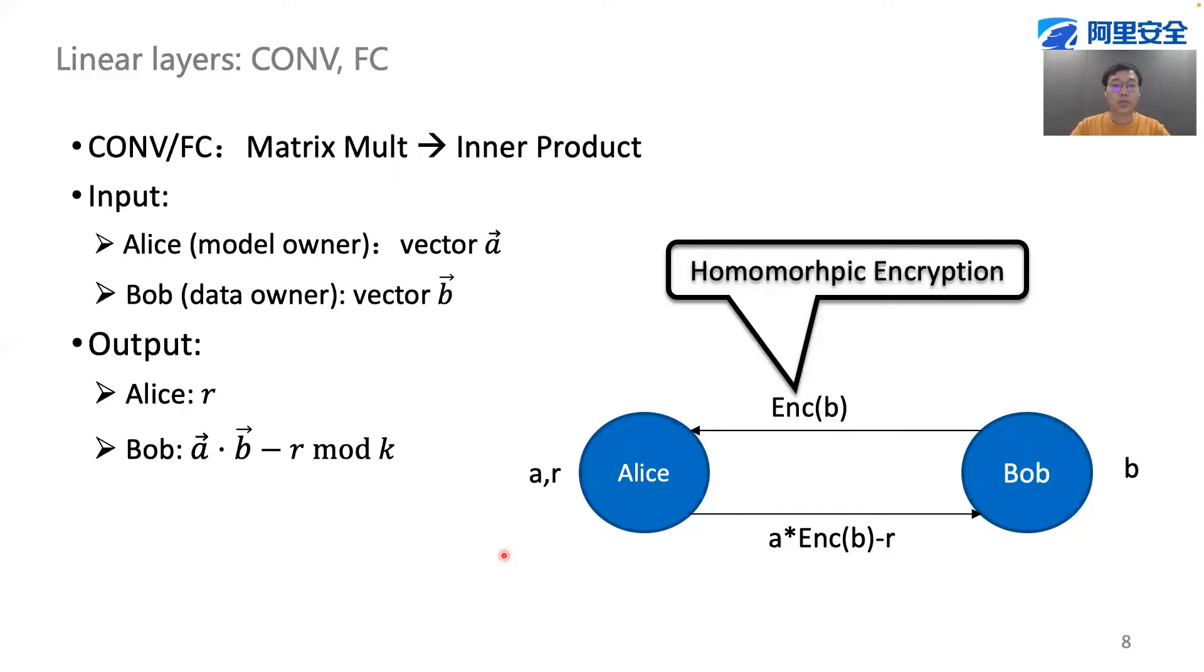Matrix multiplication is composed of many inner products. Suppose each of the two parties has a vector. A simple way to implement inner product is that Bob sends its homomorphic encrypted vector to Alice, who performs the multiplication, masks the result, and sends back the result to Bob. Most existing frameworks that use homomorphic encryption to implement matrix multiplication fall into this area. But devil is in the detail. The way how we implement this process is the key to achieve high performance.